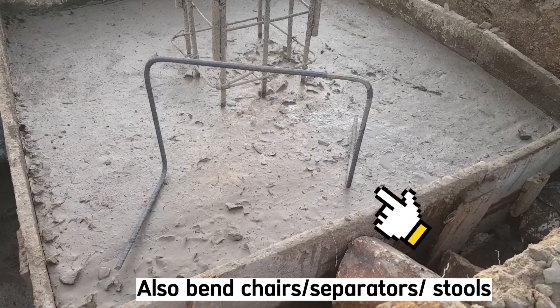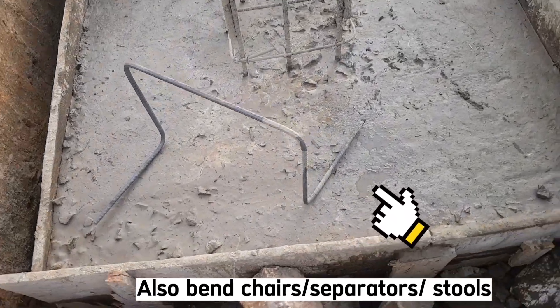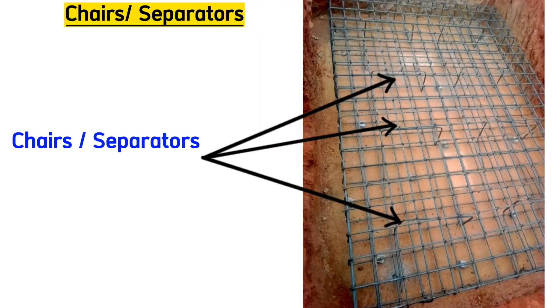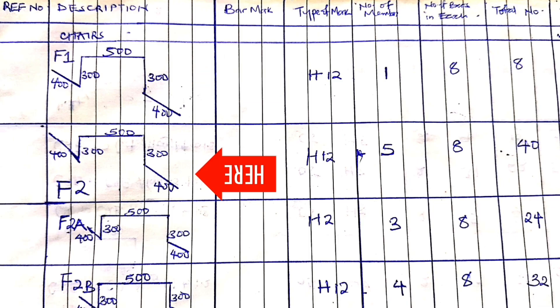Or is also bend these steel bars to act as separators or chairs to separate bottom bars and top bars. They are not always included in the drawing, but you always need them. Also cater for them in the bar bending schedule and steel order sheet.